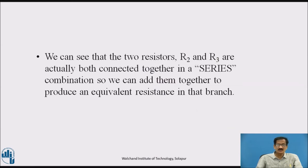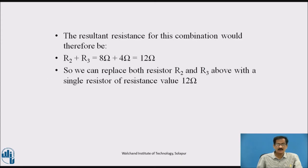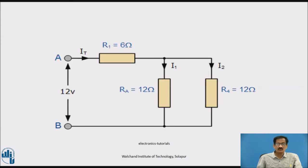We can see that resistors R2 and R3 are connected in series, so we can add them to produce an equivalent resistance in that branch. The resultant resistance is R2 plus R3 equals 8 ohm plus 4 ohm equals 12 ohm. We can replace both R2 and R3 with a single resistor of 12 ohm.